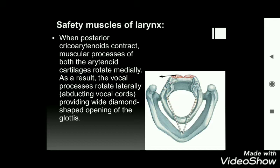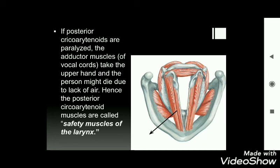If the posterior cricoarytenoid muscles become paralyzed, the adductor muscles take over and the person can die, because adduction brings the two vocal cords together, preventing air from passing into the respiratory passage. That is why posterior cricoarytenoid muscles are called the safety muscles of the larynx.